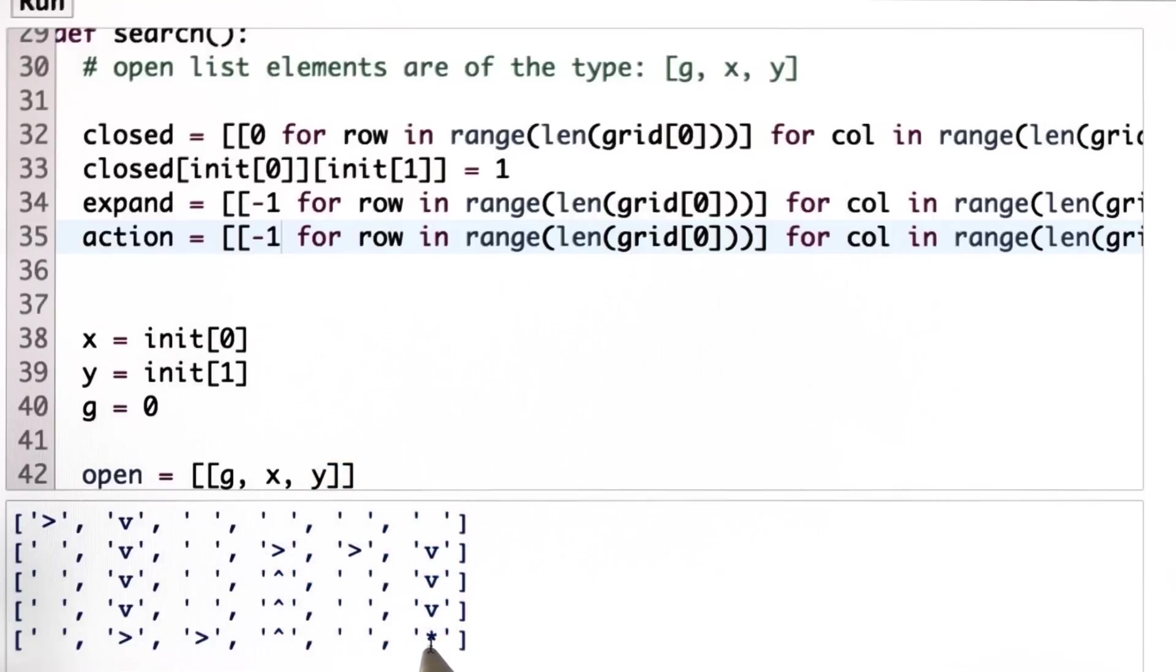So for example, if in the goal cell over here it took an action of go down to get there from the previous cell, then this cell over here would have the action index for the action down.